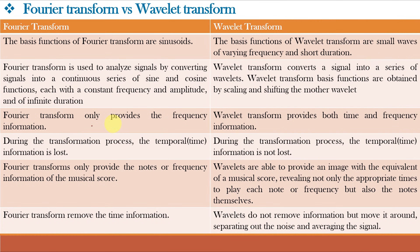Fourier Transform will only provide the frequency information and the time information is lost when we go from the time domain to the frequency domain or Fourier domain. Whereas, Wavelet Transform provides both time and frequency information, which is a very important advantage of Wavelet Transform. During the transformation process, the temporal or time information is lost for Fourier Transform, but for Wavelet Transform, the temporal or time information is not lost.